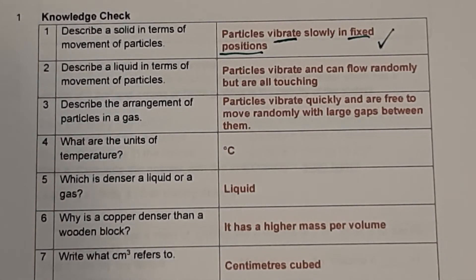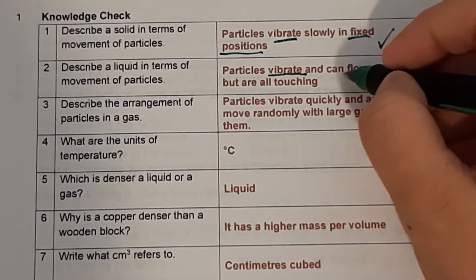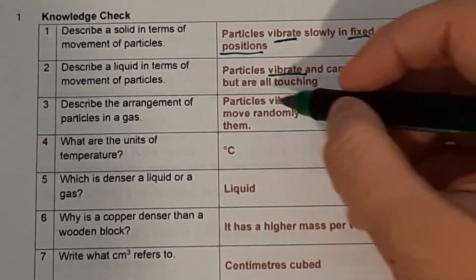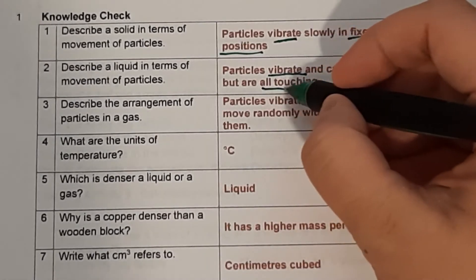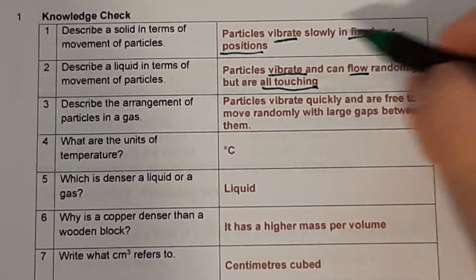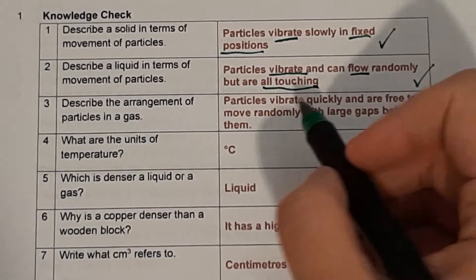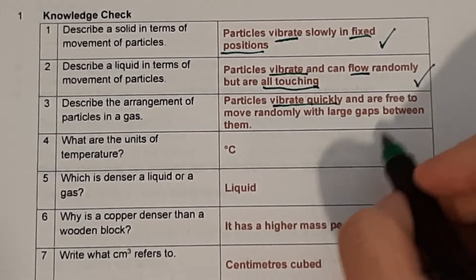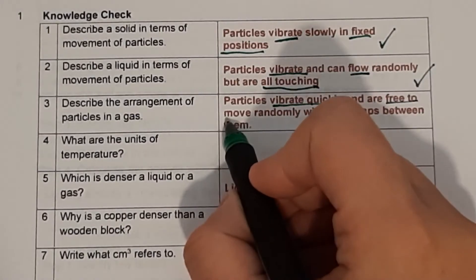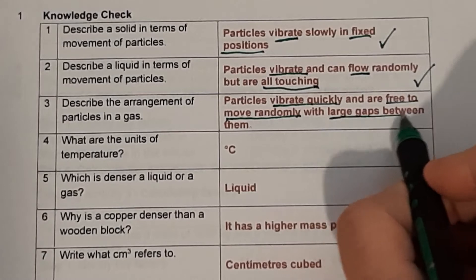Question two: describe a liquid in terms of the movement of particles. The particles are vibrating again, they can flow, but they're all touching. You may have also written that they're all touching in solids. Question three: describe the arrangement of particles in a gas. They vibrate quickly and they are free to move randomly, with large gaps between them.